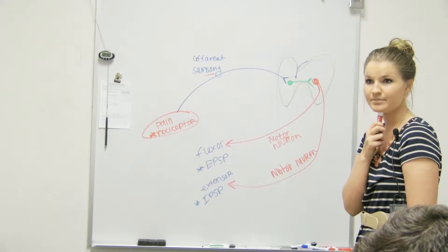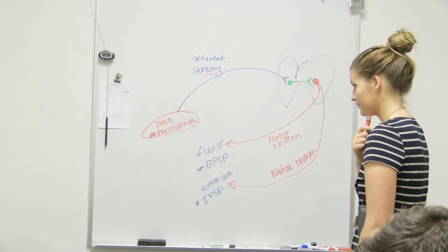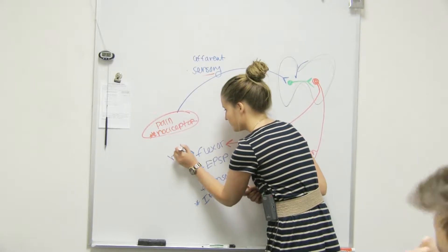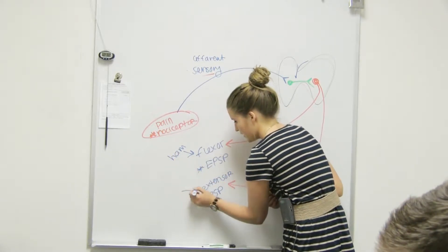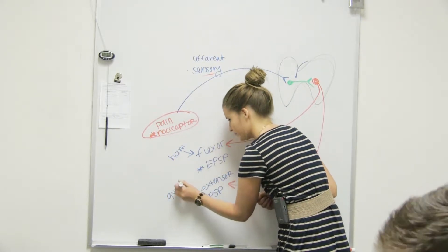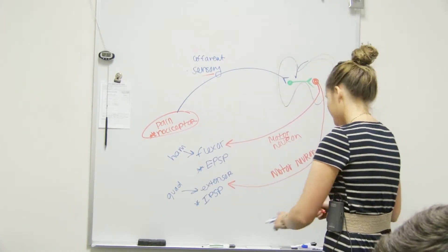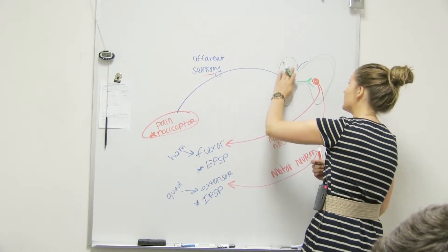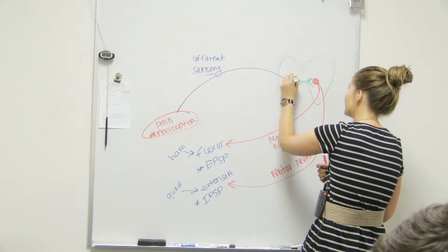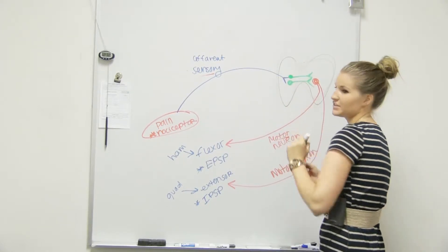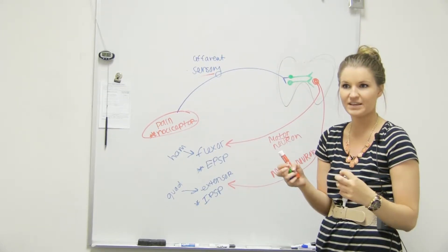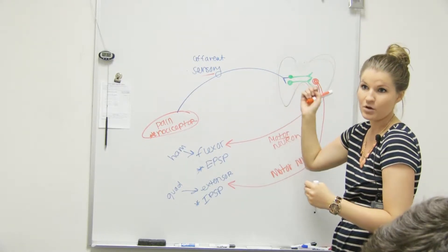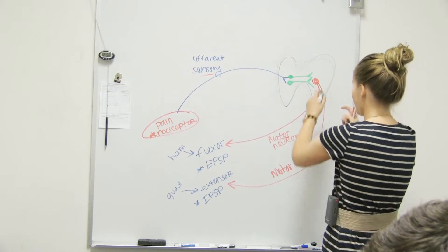That makes sense. You were using the hamstring and the quad. This is important — since they're two different things, we're going to have two interneurons, and they each connect to the two different motor neurons.